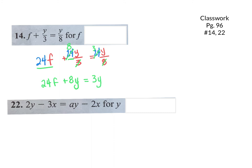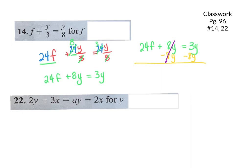I need to get F by itself. Distributing the 8: I have 24F plus 8Y equals 3Y. Wait — actually I have 24F plus 8Y equals 3Y. I need to move that 8Y over — right now it is adding 8Y, so I subtract 8Y from both sides. On the left it cancels, leaving just 24F. On the right I have 3 minus 8, which is negative 5Y.